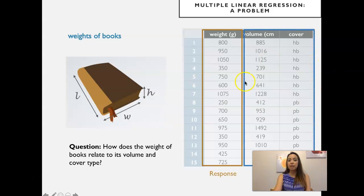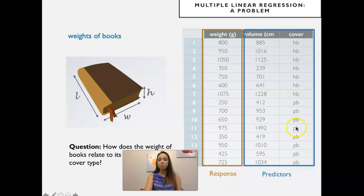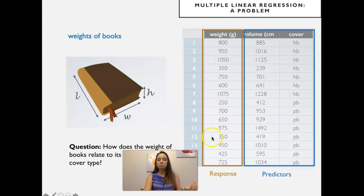In blue we have the predictors, so we have two of them this time, and in brown you have the response variable. We'll run a model where we try to determine how these two predictor variables relate to weight.